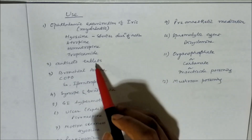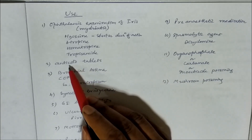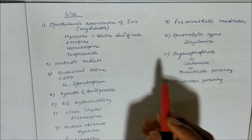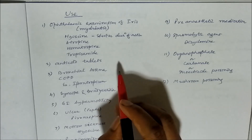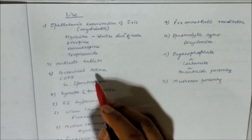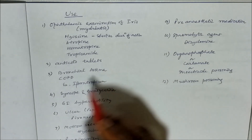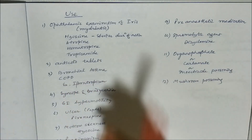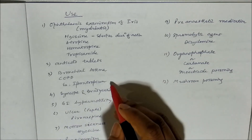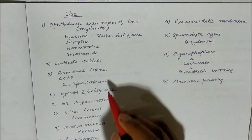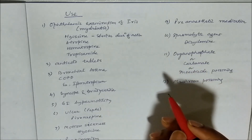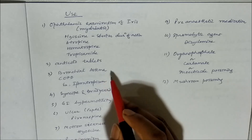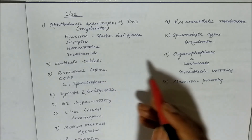Parasympatholytics decrease the secretions, so they can be used as anti-cold tablets — they will decrease the nasal secretions. They can also dilate the bronchioles, so we can use them in bronchial asthma and chronic obstructive pulmonary disease (COPD). Drugs like hyoscine and tropicamide can be used, but these are all second-line drugs, not preferred. In this case, the preferred drug is beta-2 agonists: salbutamol, terbutaline, etc.